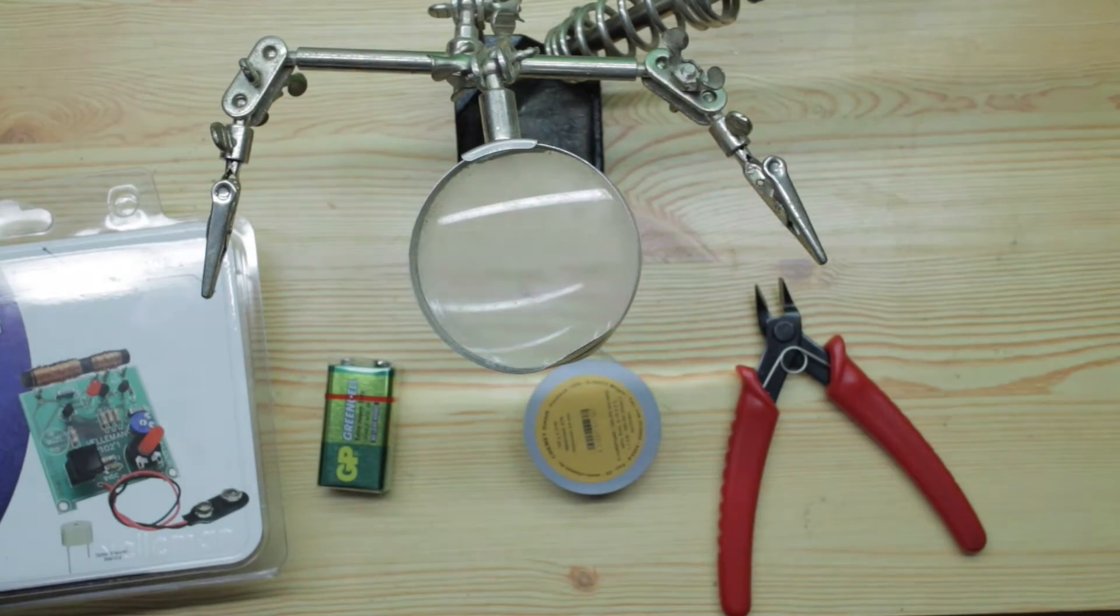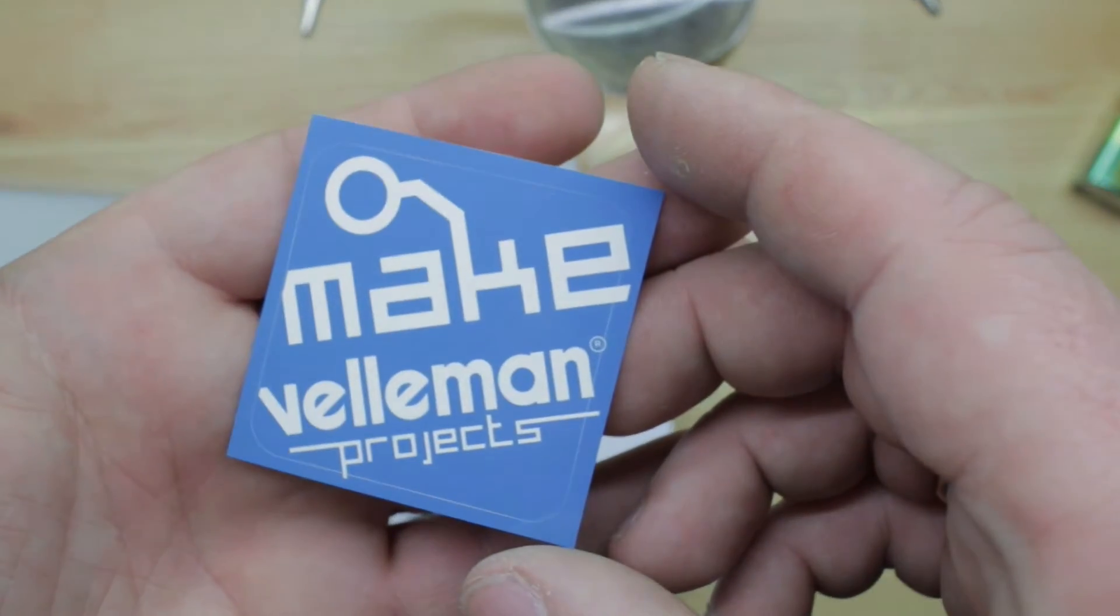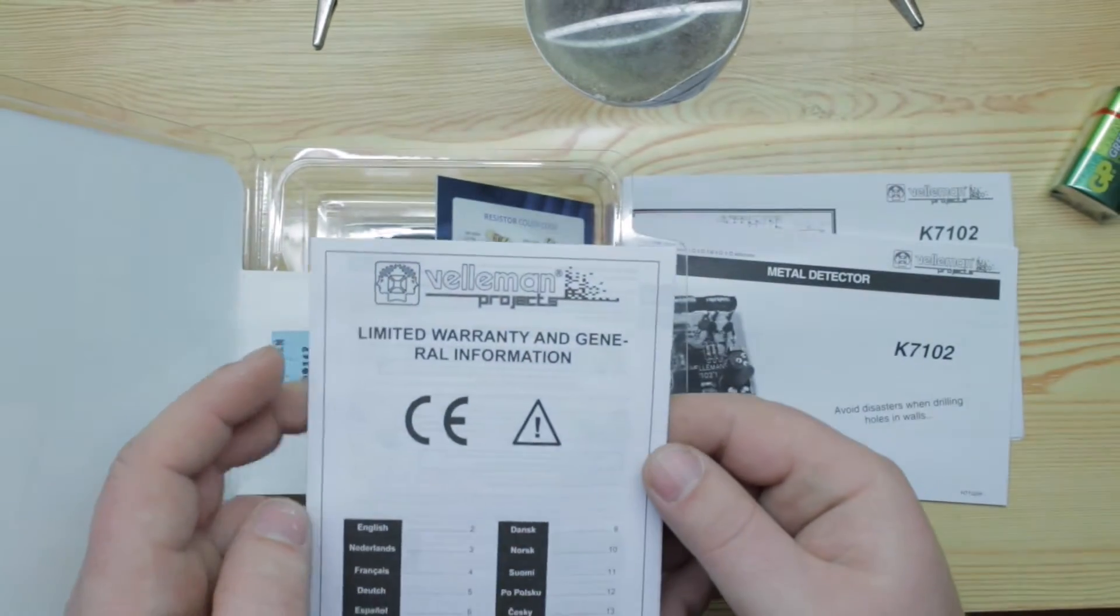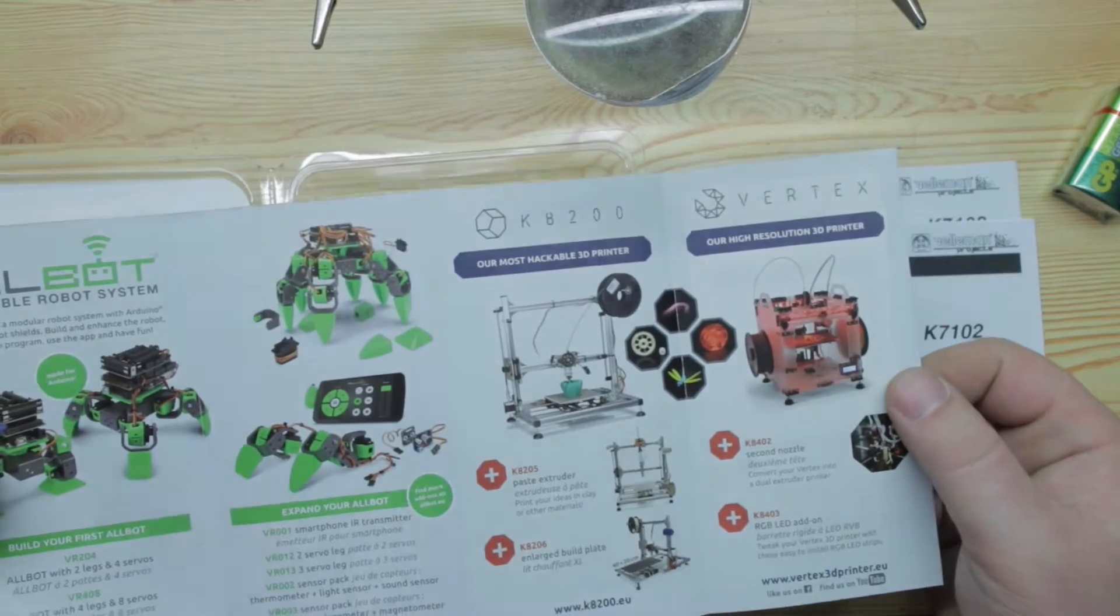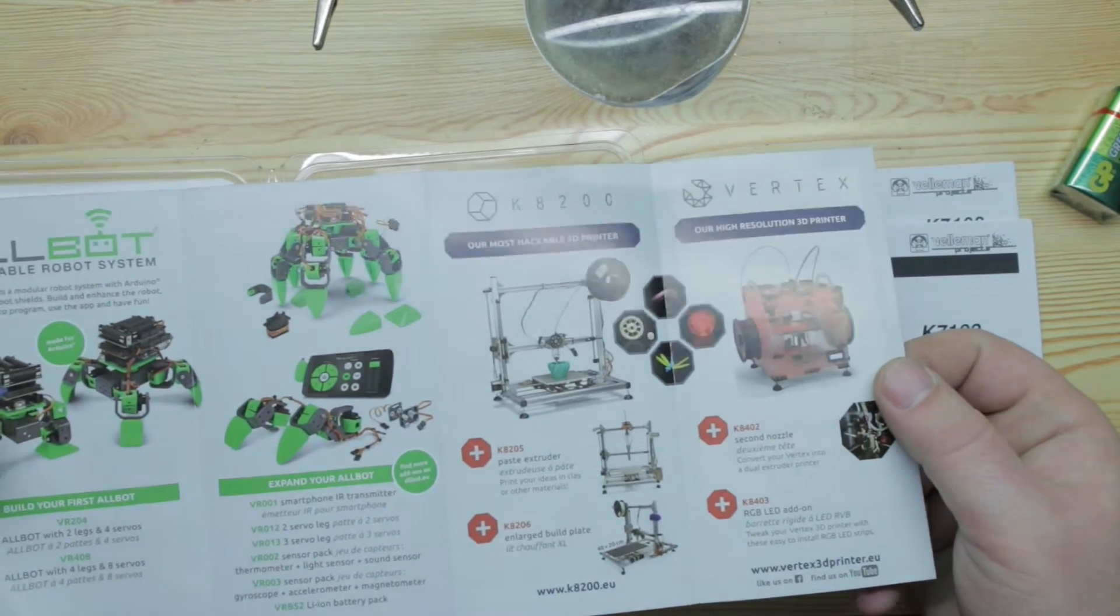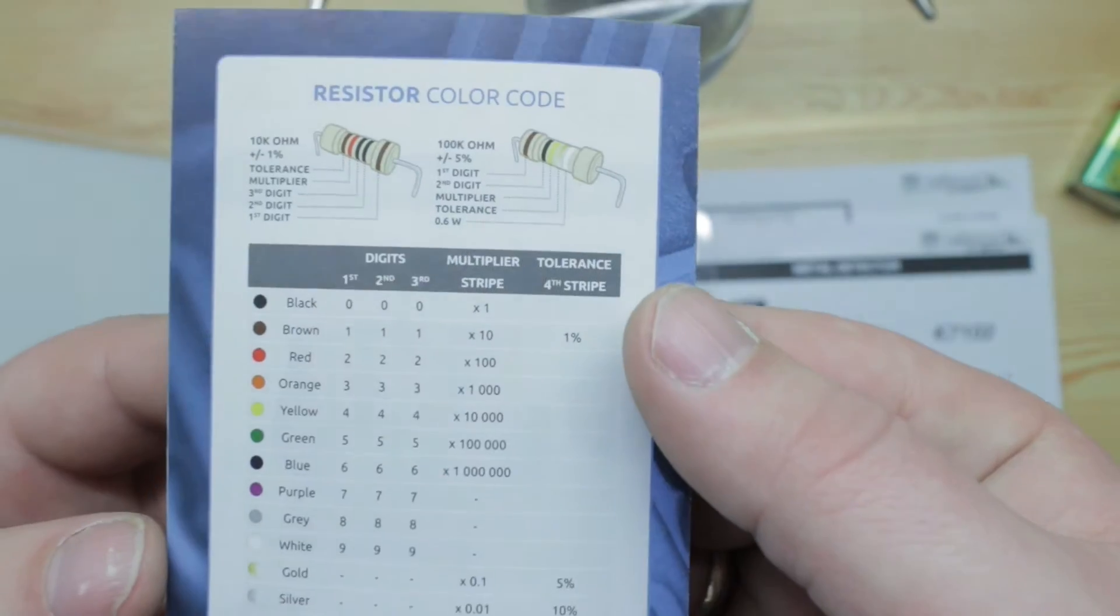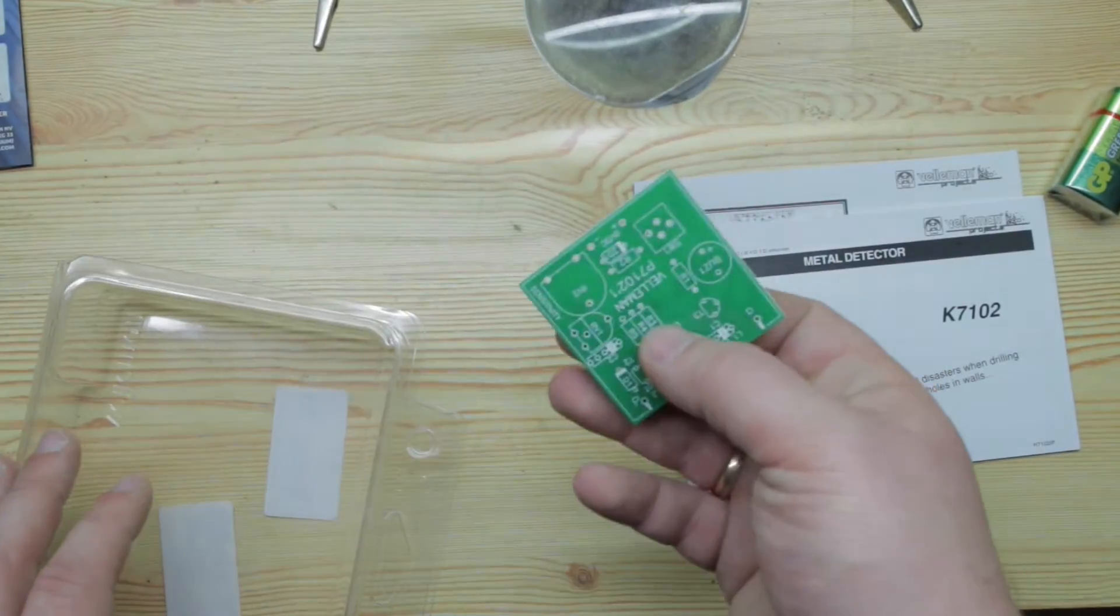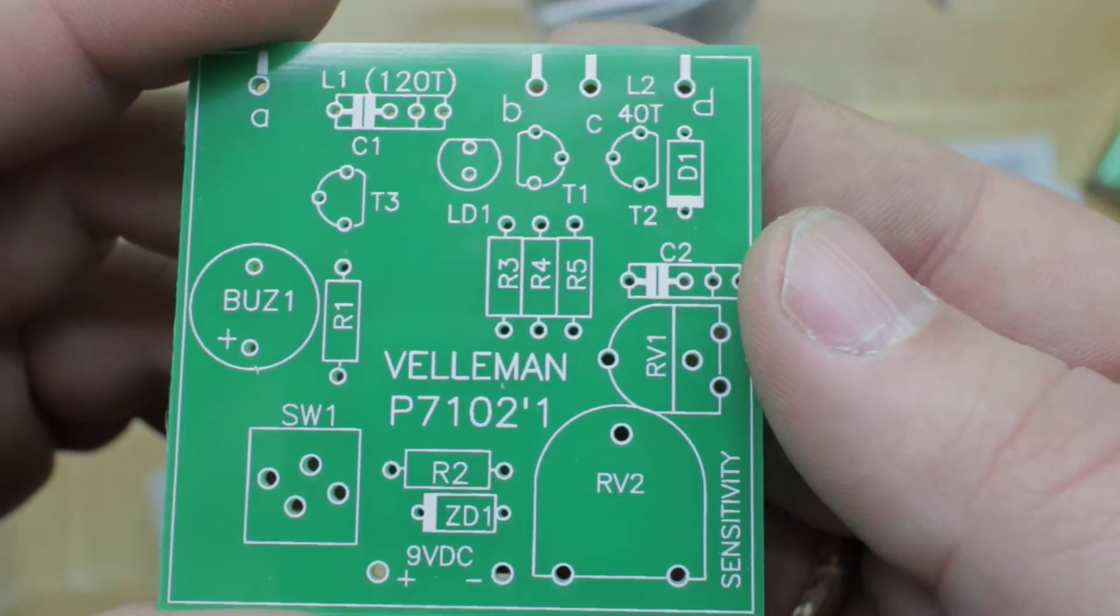Let's start with opening up the kit. A Velleman sticker, manuals, limited warranty and general information, a booklet of other projects you can purchase from Velleman, and a resistor color code guide. One of the most important is the PCB - it's professionally made with everything very well marked.